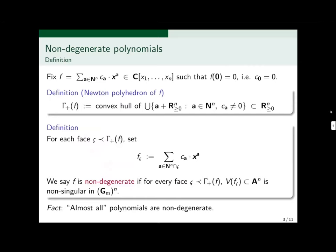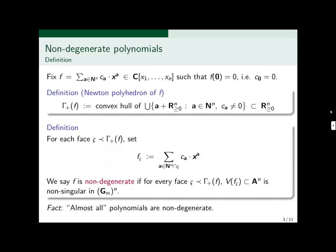That's the definition of the Newton polyhedron of F. Now I want to explain what it means for a polynomial to be non-degenerate. For each face of the Newton polyhedron, if σ is a face, we consider the part of F sitting on that face — precisely all the monomials such that the corresponding vector A sits on σ. We say F is non-degenerate if for every face σ, the vanishing locus of F_σ is non-singular in the torus G_m^N contained in A^N. The fact is, almost all polynomials are non-degenerate; any generic polynomial will be non-degenerate.